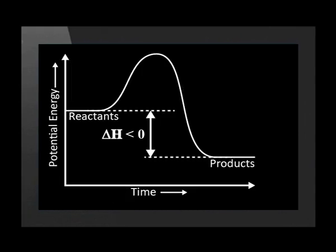This is what the curved graph for an exothermic reaction looks like. The reactants are at a higher energy than the products and delta H is negative.